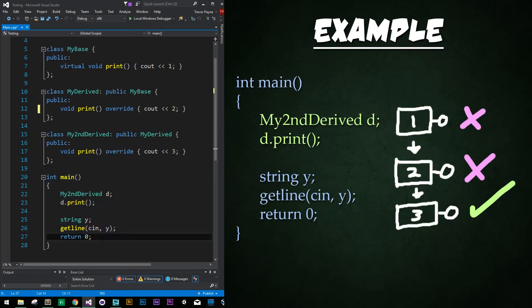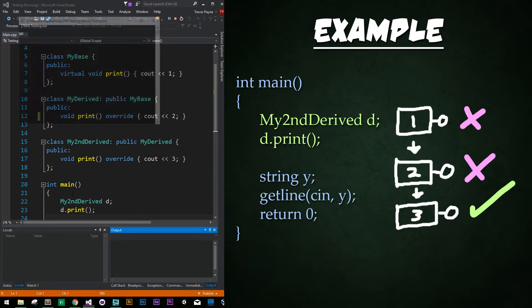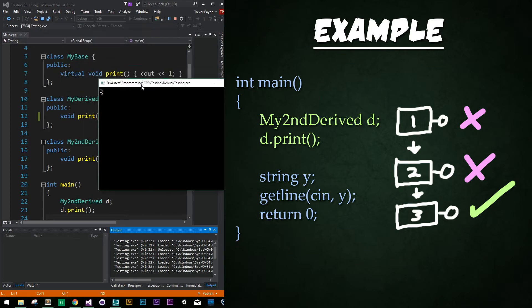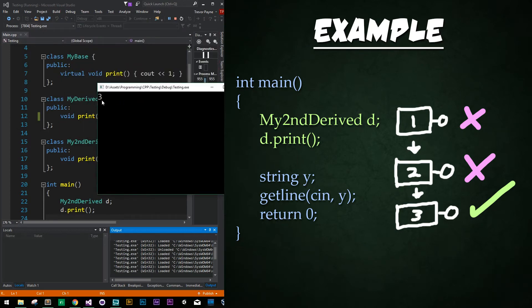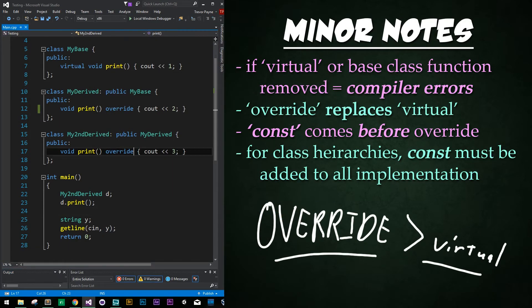Down below in the main function, we're going to create an instance of the second derived class and just call print. So it'll print one if it's in the base class, two if it's in the derived class, or three if it's in the second derived class. So let's go ahead and run the program and we see that three is being output right here.